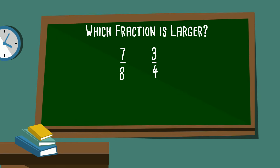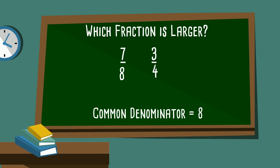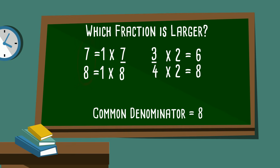Now we have seven-eighths and three-fourths. Again, I can't just look at them and see which fraction is larger, so I'm going to find a common denominator. The common denominator of eight and four is eight. Eight goes into eight one time, so eight times one is eight, and seven times one is seven. Four goes into eight two times, so four times two is eight, and three times two is six. I now have a common denominator, and I can easily tell that seven-eighths is larger than six-eighths, so seven-eighths is larger than three-fourths.